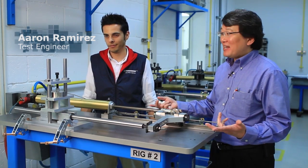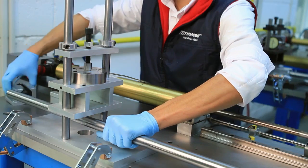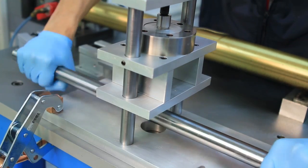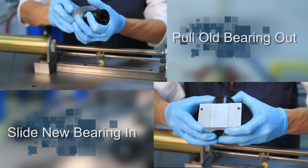So what we're going to do right now is we're going to take out the failed bearing. And what he's going to do is he's going to unload the load cell, block off the load plate, and then pull the shaft out, replace the bearing, put in a brand new bearing.